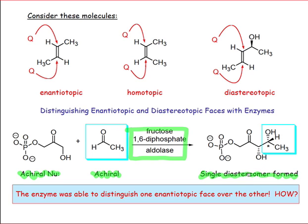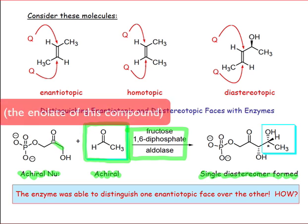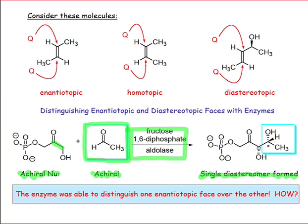This means that two things happened. First, the enzyme was able to distinguish the enantiotopic faces of the electrophile. And secondly, the enzyme was also able to distinguish the enantiotopic faces of the nucleophile. That leads to the formation of only a single diastereomer, because there's a very specific approach of the nucleophile to the electrophile, and only two very specific faces of the nucleophile and electrophile come into contact.